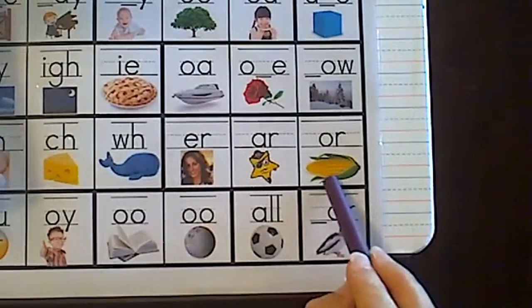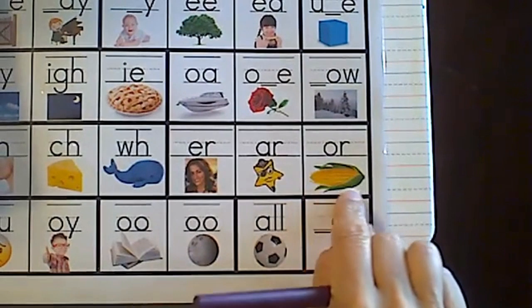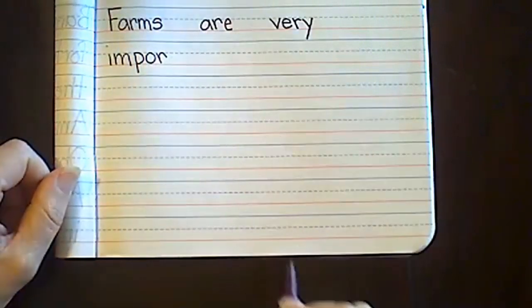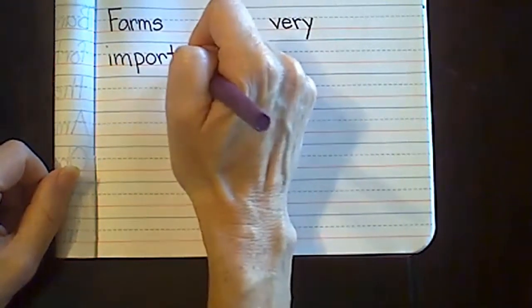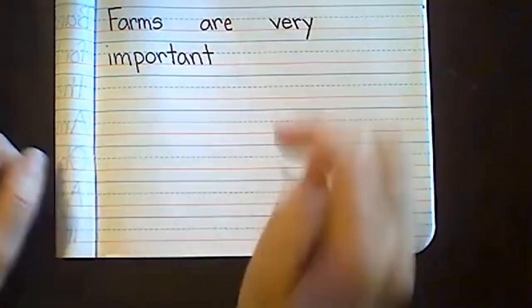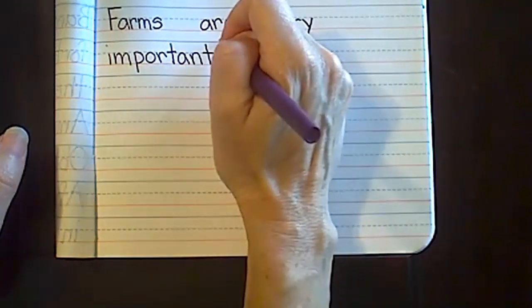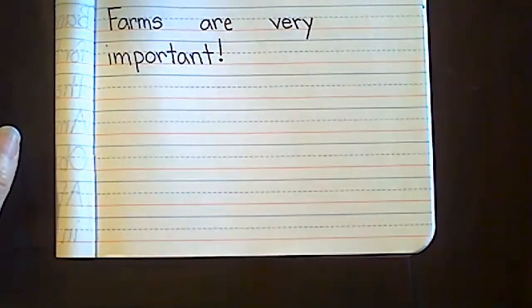If we look at our sound page, we know that O-R says 'or,' as in corn. Farms are very important — and that's really important for us to share, so I'm going to give it an exclamation point as our punctuation mark. Now that we have our topic sentence, why are farms so important? It's where we get all of our food to eat.